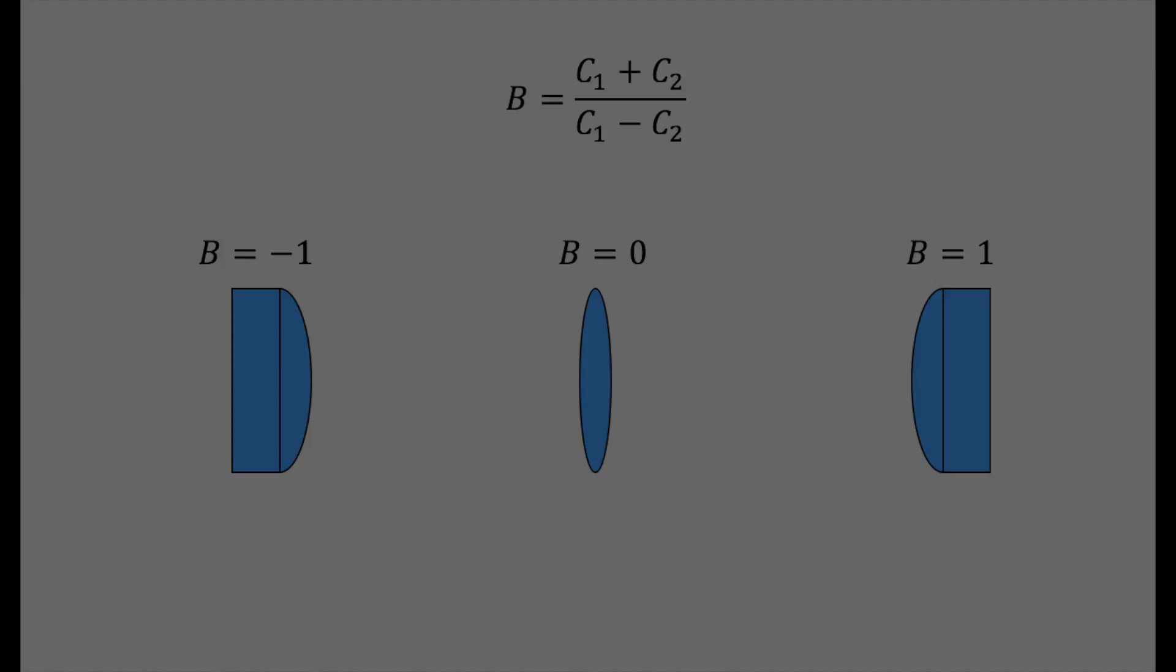For an object at infinity and a lens with an index of 1.5, the shape factor that will make the angle of refraction at each of the surfaces equal, thus minimizing spherical aberration, is roughly 0.7.